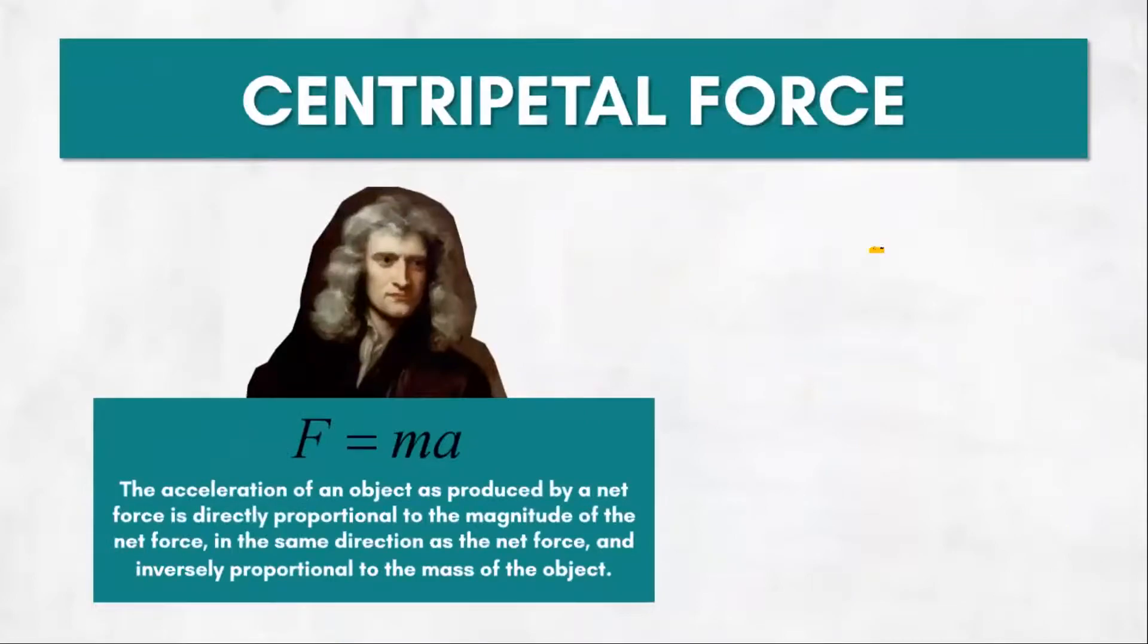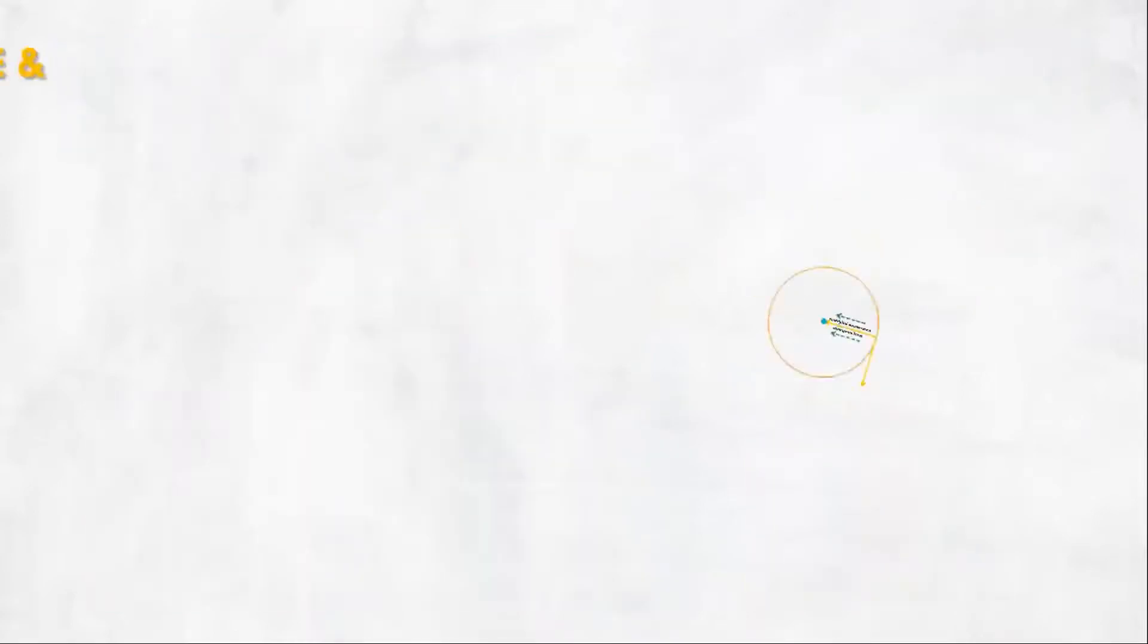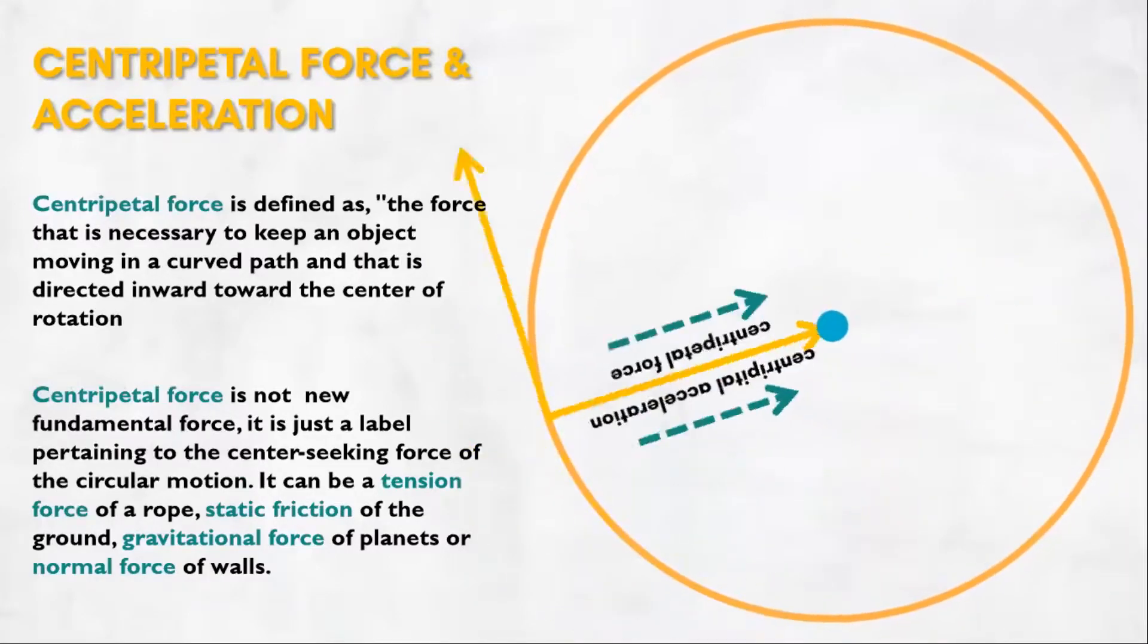For the centripetal force, it just follows Newton's second law where F equals MA, which means that centripetal force equals M multiplied by V squared over R. Also remember that centripetal force is directed towards the center of the circle, not outwards.